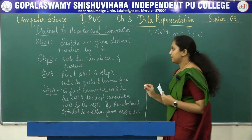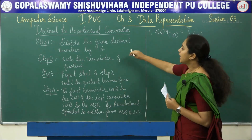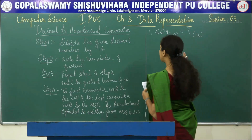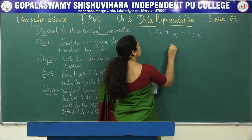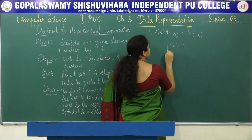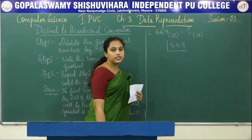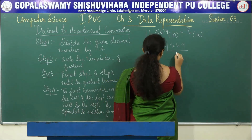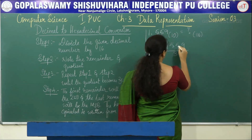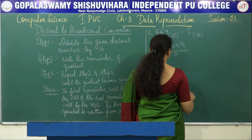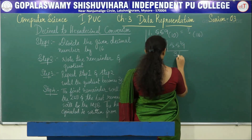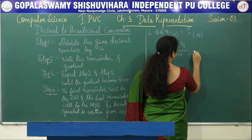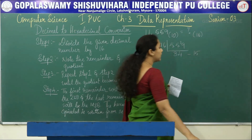The first step is to divide the given decimal number by 16. Our decimal number is 559, so divide it by 16. 16 times 3 is 48, and 7 is the remainder. Then 16 times 4 is 64, and 15 is the remainder.